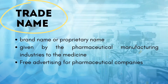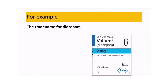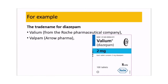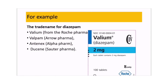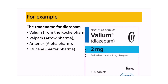Trade name is the brand name given by pharmaceutical manufacturing industries. For example, the trade name for diazepam is Valium, given by Roche Pharmaceutical Company; Valpam by Aro Pharma; and Ducin by Esoter Pharma.